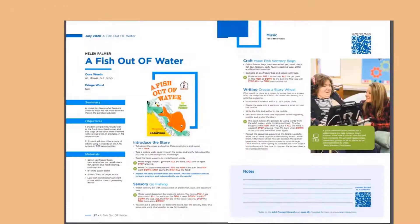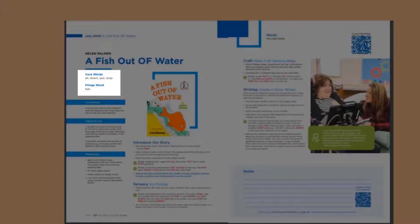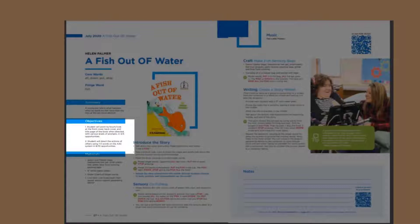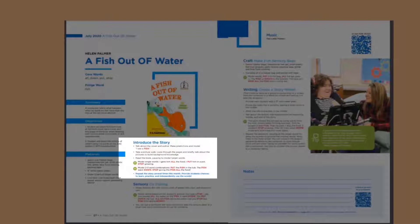In each month's lesson, you will find five or six target words to model, as well as some simple, short-term objectives to help you target your instruction. You will find a section called Introduce the Story with suggestions for how to read and model the target words during your reading time with your AAC learner. Feel free to add additional vocabulary based on your students' individual needs.